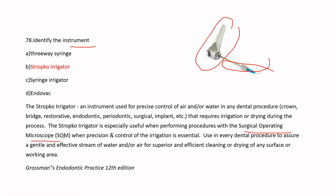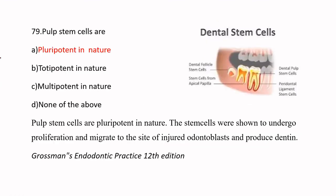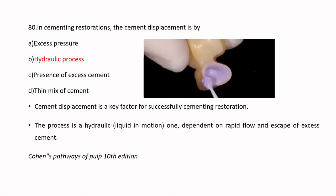Pulp stem cells are pluripotent in nature. They undergo proliferation, migrate to the site of injured odontoblasts, and produce dentin. Pulp stem cells are classified as pluripotent stem cells.